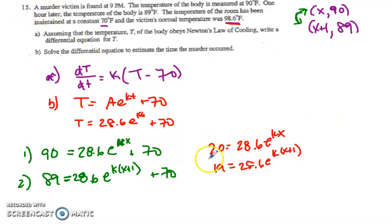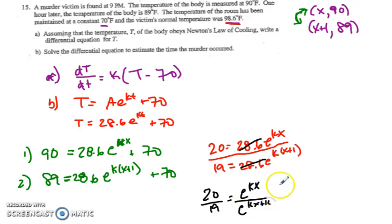I can actually take the ratio between both sides of this equation and maintain the equality because of the exponential growth nature of this equation. So 20 over 19 will equal... the 28.6s will cancel. So 20 over 19 will equal e^(kx) over e^(kx+k). And I figured that out by distributing the k down there.